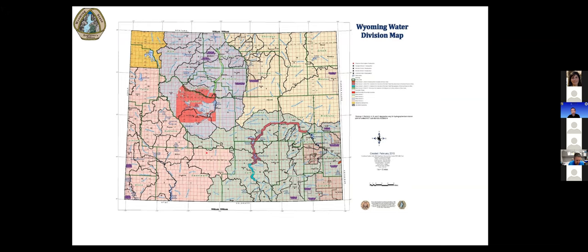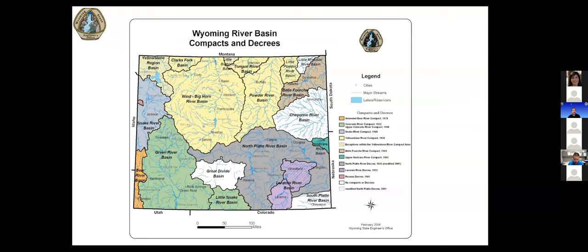Pay attention to that north-south line between divisions 2 and 3 — that's a division line that comes up on the next map. This is a map of all of our compacts and court decrees that Wyoming is a part of. As Wyoming is a headwater state, there's lots of folks downstream who like to keep track of the water. That same north-south line between the Wind River Bighorn Basin and the Powder River Basin shows that some of these decrees are more complicated as they cross division and district lines. The Tongue River Basin along the state line and the North Platte River Basin are our two biggest calls and allocations that we're in right now.